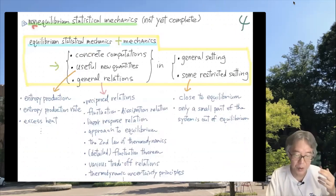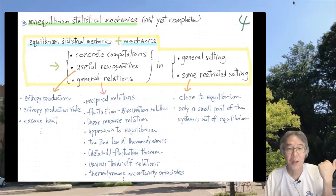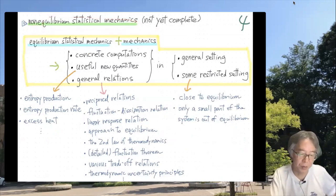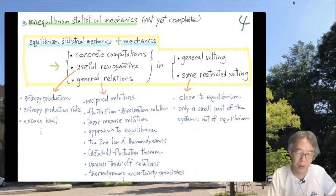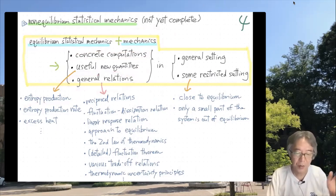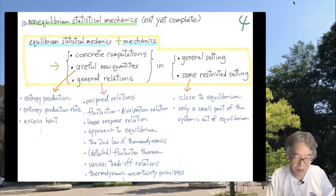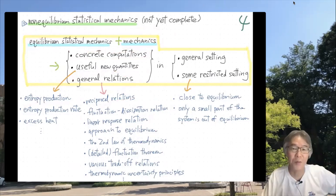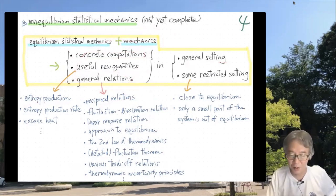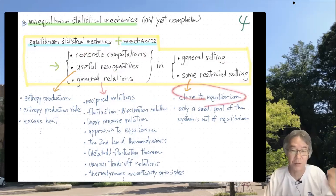Non-equilibrium statistical mechanics is not yet complete. What we can make use of are equilibrium statistical mechanics and mechanics. From this, you can sometimes make concrete computations, but that is rare. More commonly, you try to define new useful quantities like entropy production, or derive general relations such as the reciprocal relation, linear response, and so on — sometimes in a general setting but more often in a restricted setting close to equilibrium.